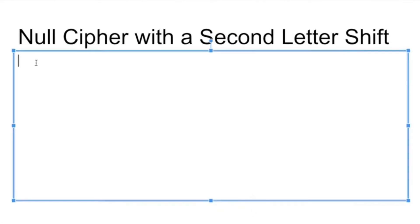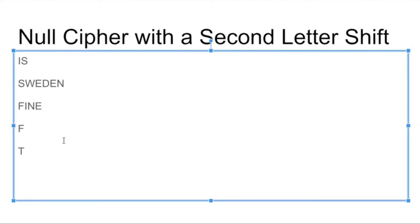Let's do an example with a second letter shift. I am going to hide the same word, SWIFT, making it into a second letter shift. I need to be more creative in my message construction. My first word is 'is,' next is 'Sweden,' then 'fine' — leaving I as my second letter — then 'after,' and finally 'strike.' Now we have a sentence: 'Is Sweden fine after strike?'